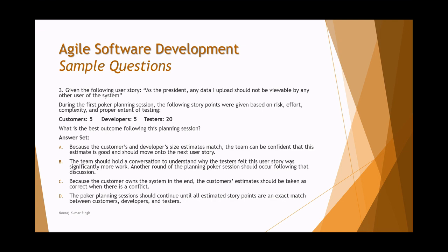Option C says the customer's estimate should always be taken as correct when there's a conflict — but customers are just collaborative contributors; estimation is an internal team matter. Option D says planning poker should continue until all story points are an exact match — but we look for probable matches, not an infinite loop requiring all three to match exactly without discussion. So the most relevant answer remains B.